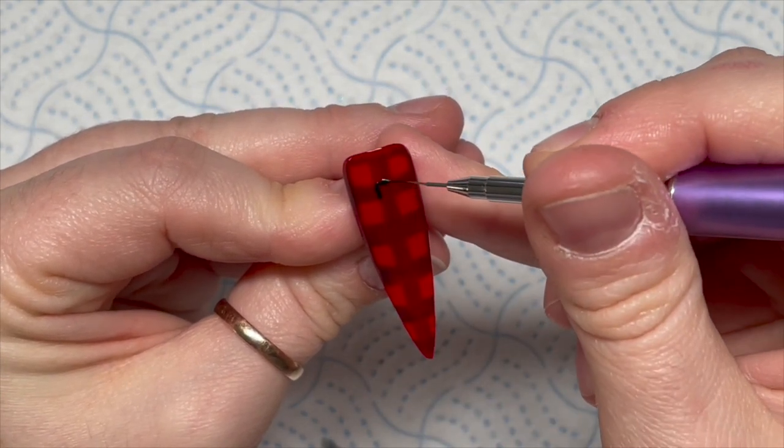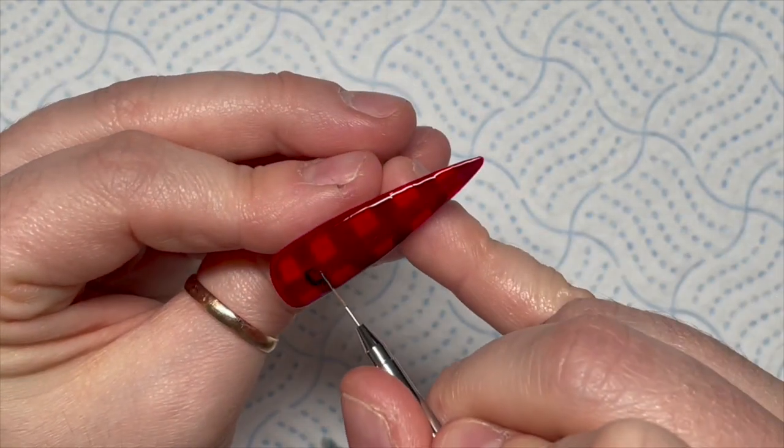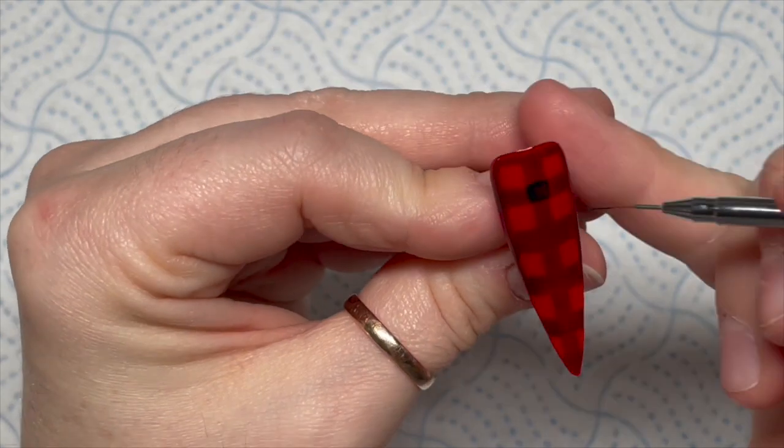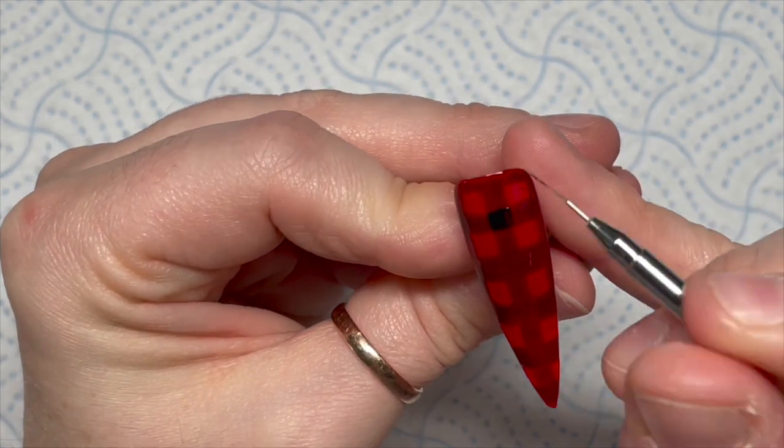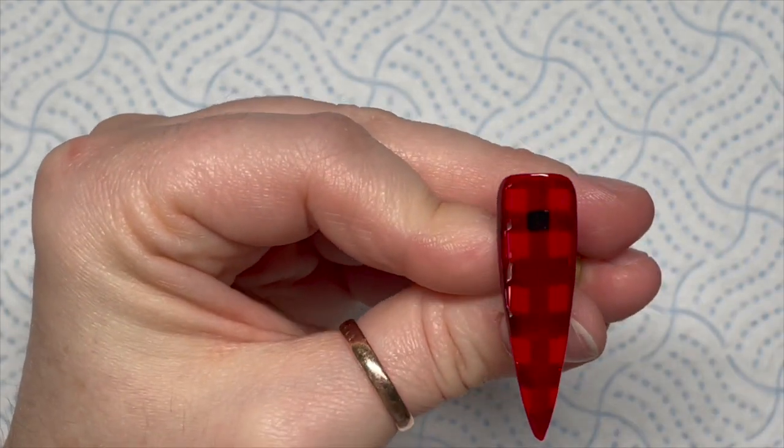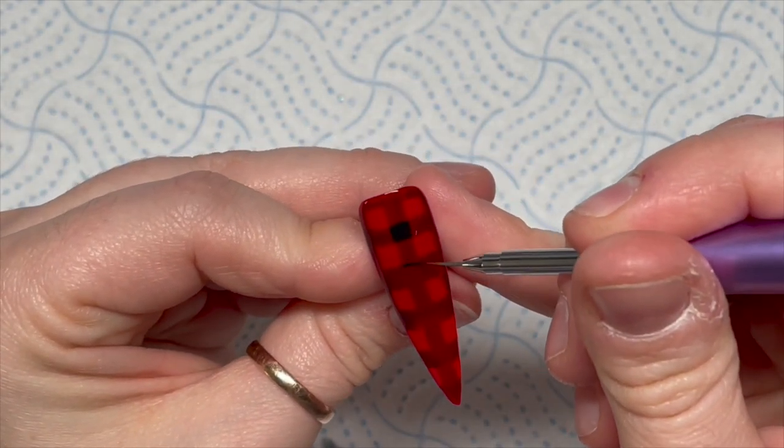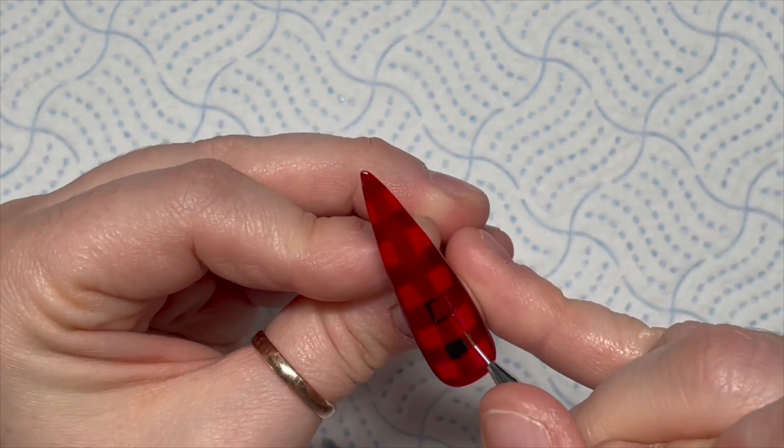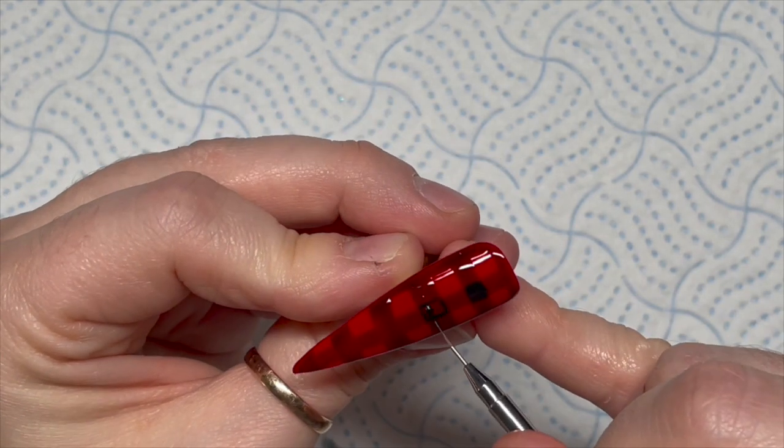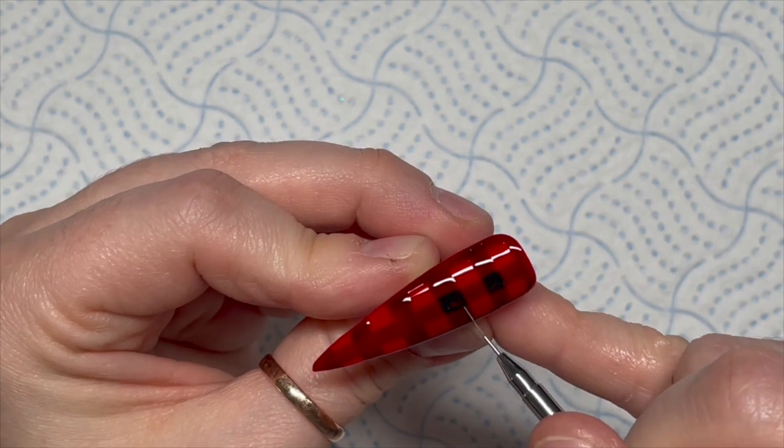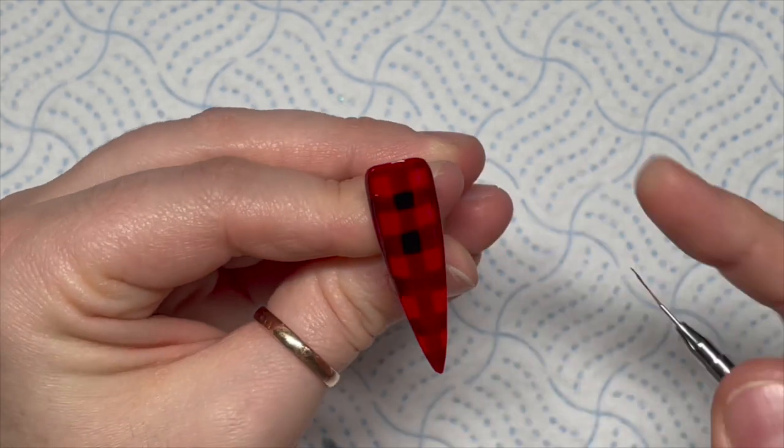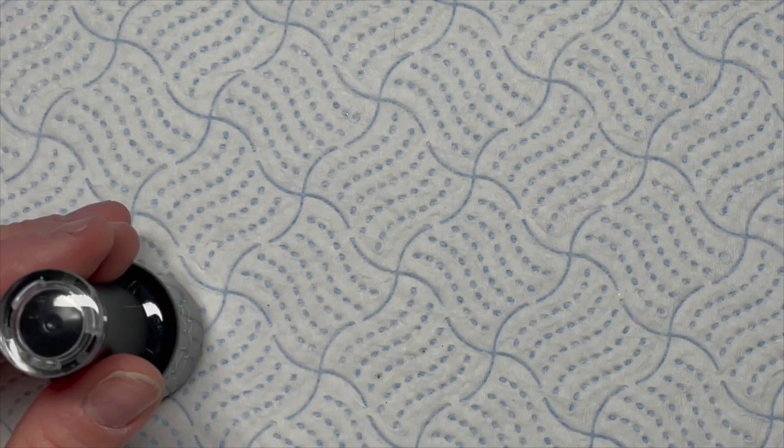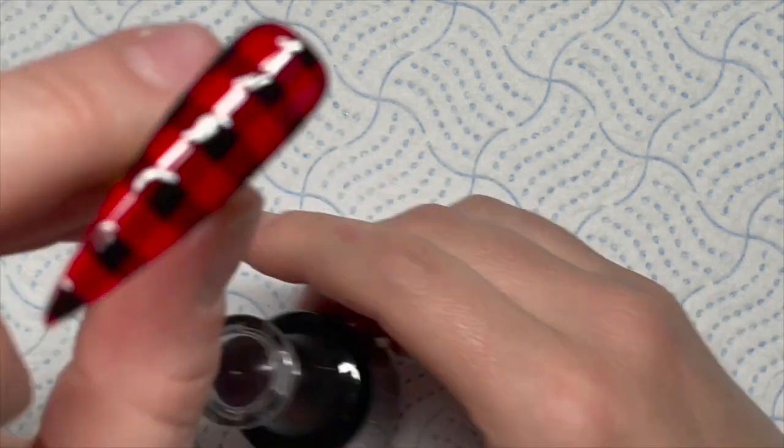Once we're all the way down the bottom, now we can pop that in the lamp for a 30 second cure. Can you see where the shadowy lines meet? I'm using the solid black, perfect black gel polish from Madam Glam and I'm just filling in the squares. Every area where the translucent lines cross, that's the square that we're gonna fill in with the black gel polish. Does that make sense? Because that would be darker. If the two lines overlapped, it would become darker. And then once I've done them all, I'm gonna pop them in the lamp and it should look like this.